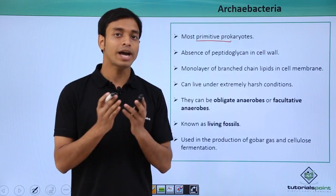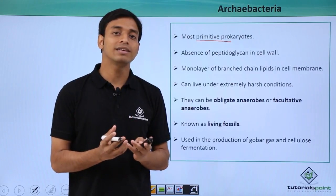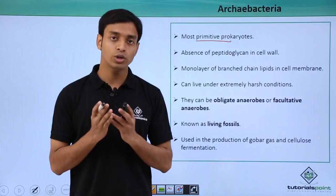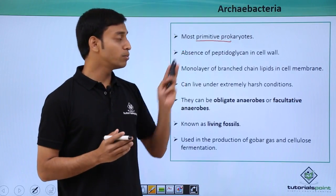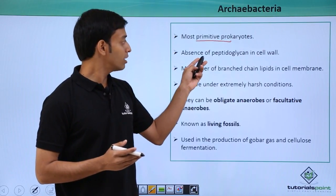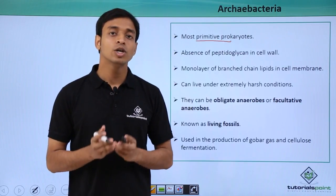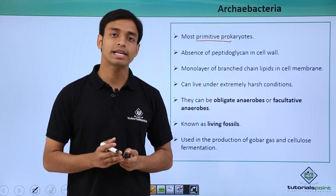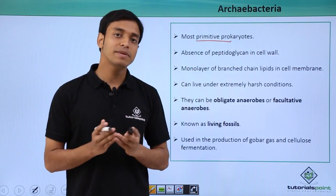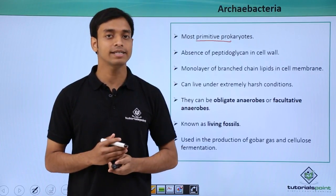It is believed that these Archaebacteria came into life on Earth just after the origin of life, making them one of the most primitive type of prokaryotes. They do not have peptidoglycan in the cell wall, as compared to other types of bacteria which have peptidoglycan. They may have proteins and non-cellulose polysaccharides in their cell wall, but peptidoglycan is absent.